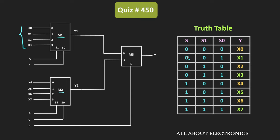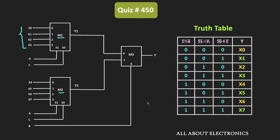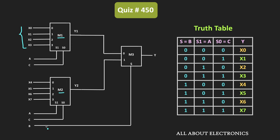This is the truth table of the 8x1 multiplexer. As you can see, the selection input S is equal to B, but the selection inputs S1 and S0 are A and C respectively. That means our selection inputs are B, A, and C, where B represents the MSB and C represents the LSB.